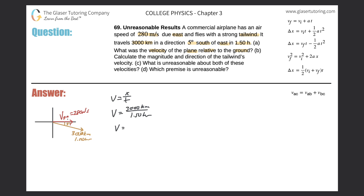And when we do that math, we simply get 3,000 divided by 1.5, which is 2,000. So this is 2,000 kilometers per hour. Now we can leave it here or we can convert it into meters per second.